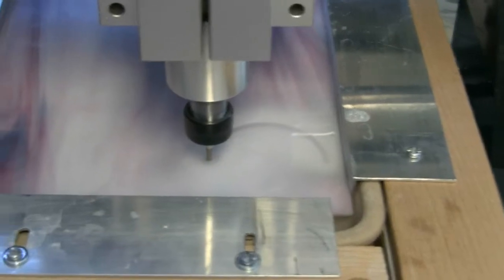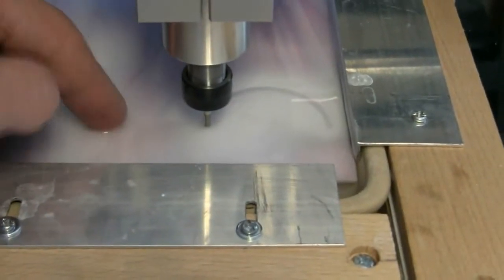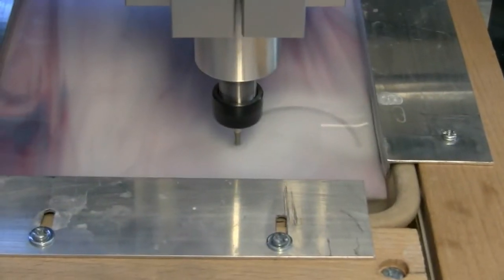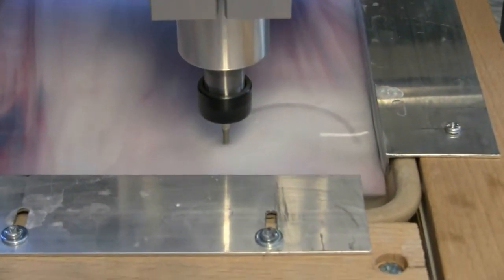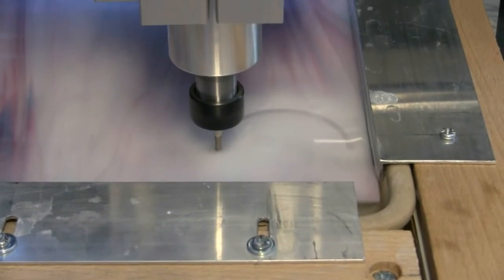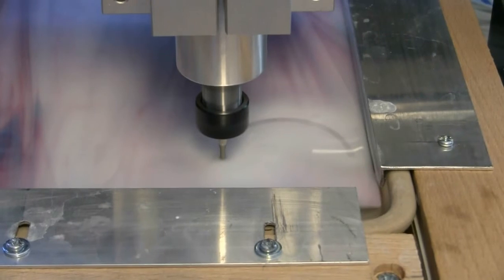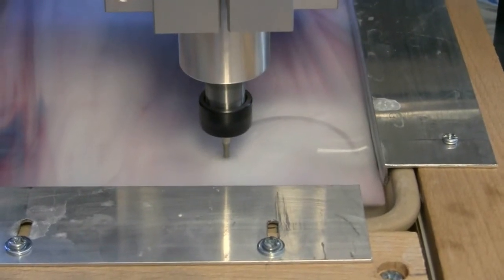The glass is submerged in just normal tap water with a cap full of shower shine thrown in. Just so the water breaks the surface tension. The theory being it will stick better to the milling bit.